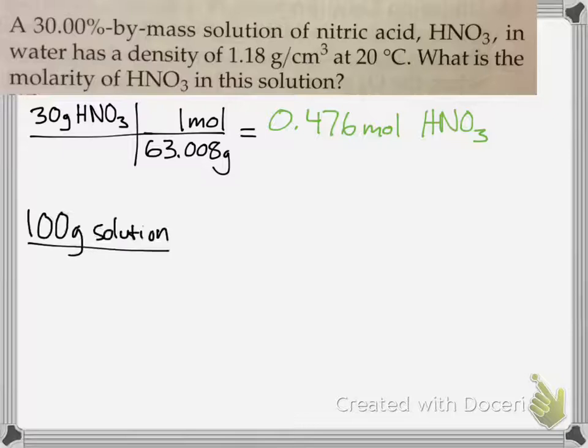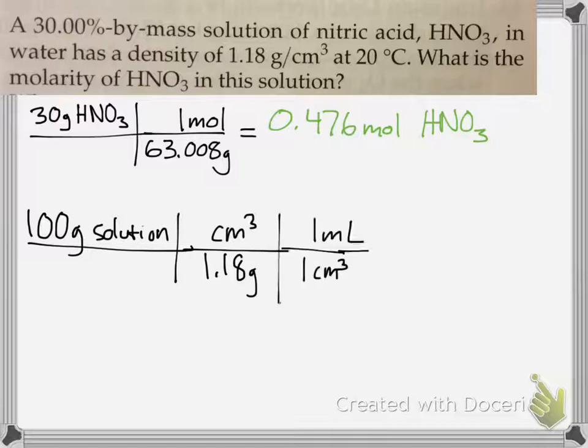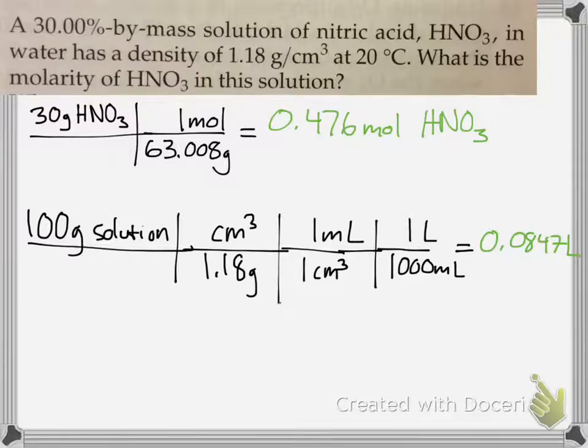We're given the density of water. We assumed a 100-gram sample, so we have 100-gram solution, and the density of the solution is 1.18 grams per centimeter cubed. Now, we want this in liters, so you can do a quick conversion. Remember, 1 centimeter cubed equals 1 milliliter, and 1,000 milliliters are in a liter, and you get 0.0847 liters.